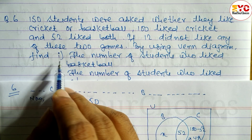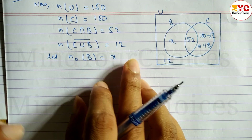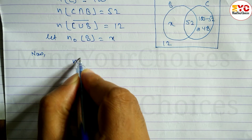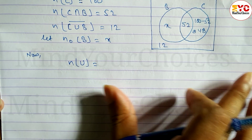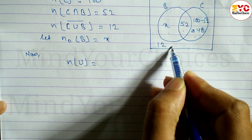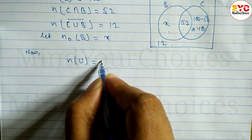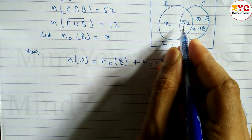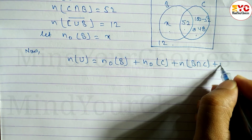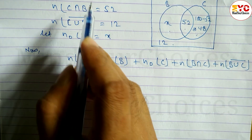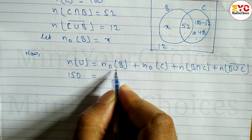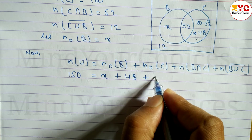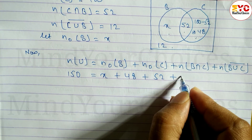Find the number of students who like basketball: N(B). From the diagram, N(U) equals the sum of all regions: N(only-B) + N(only-C) + N(B ∩ C) + N(B ∪ C)'. So, 150 = X + 48 + 52 + 12.